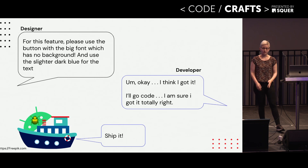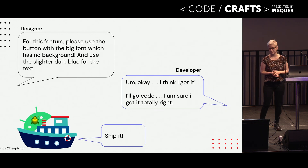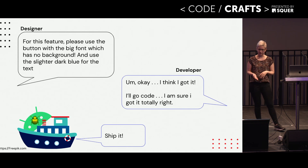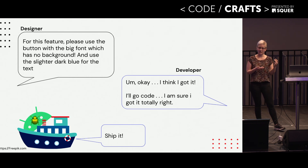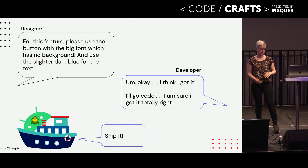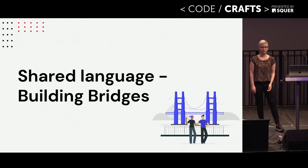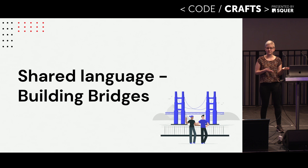But it could be even worse. Similar situation - I get the task for a new feature and I get the response: for this feature, please use the button with the big font, which has no background, and use the dark blue for the text. Okay, I've seen this button already, I have it in my code, I know what it should do. I build a feature, it's shipped. But then the app is uploaded, it's out in the stores, and I realize I have a visual bug inside. That's a lot of additional effort. In communication, we often find ourselves speaking about the same things without being aware of it, because we have different names for things. Giving things a unique name helps to shape a shared language between designers and developers.